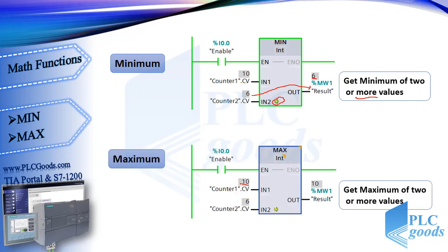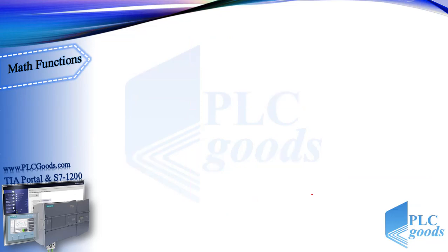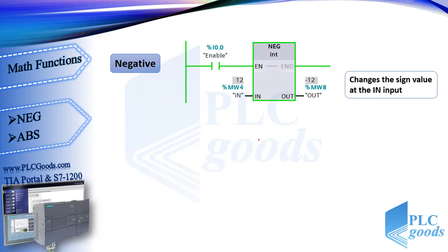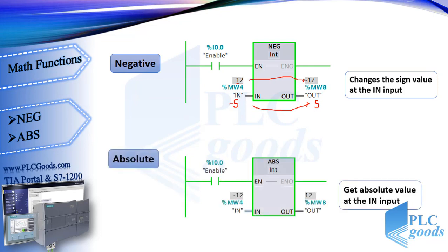The MAX function shows 10 from its inputs. The negate function changes the sign of the value at the IN input — if it is 12, this instruction will give us -12; if the input value is -5, it will send 5 to its output. ABS is the syntax for the absolute function used in many programming languages — it gets the absolute value, so for either -12 or 12 at the input, the output will be 12.